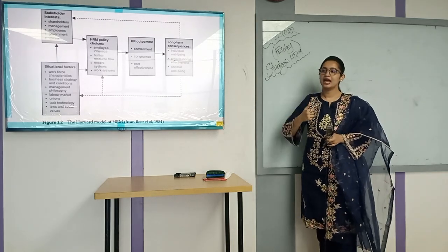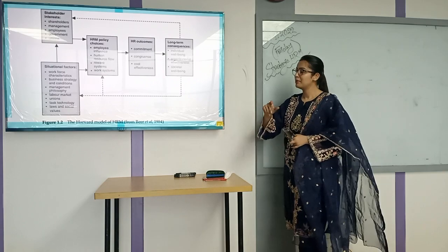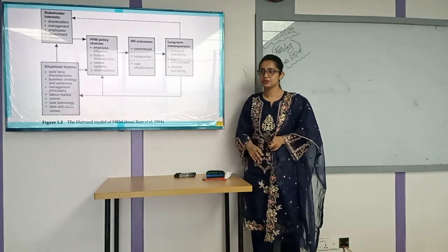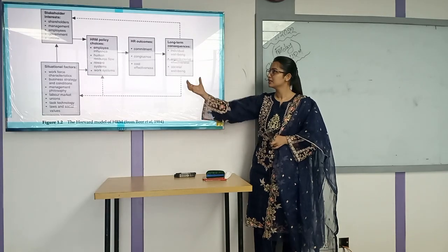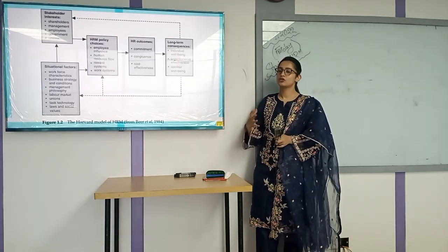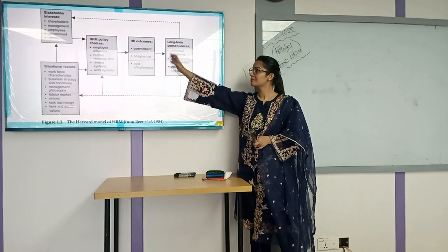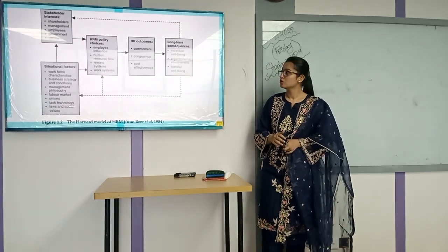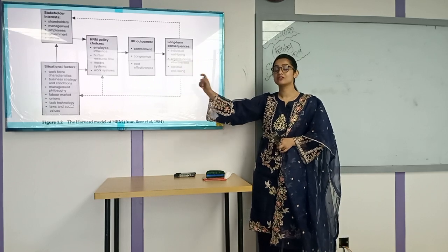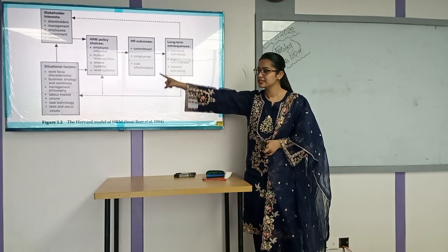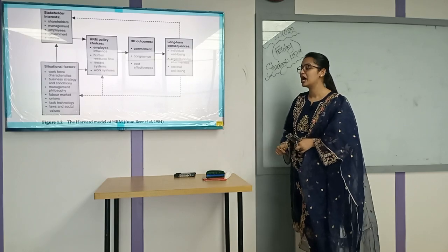If outcomes are negative, in the long run individual well-being is interrupted, social well-being won't happen, and the organization will not be effective. Whether the company runs positively or suffers in the long run depends ultimately on the HR policy. So we have to choose our HR policy very carefully, depending on these two factors: stakeholder interest and situational factors. This is the Harvard model of HR.